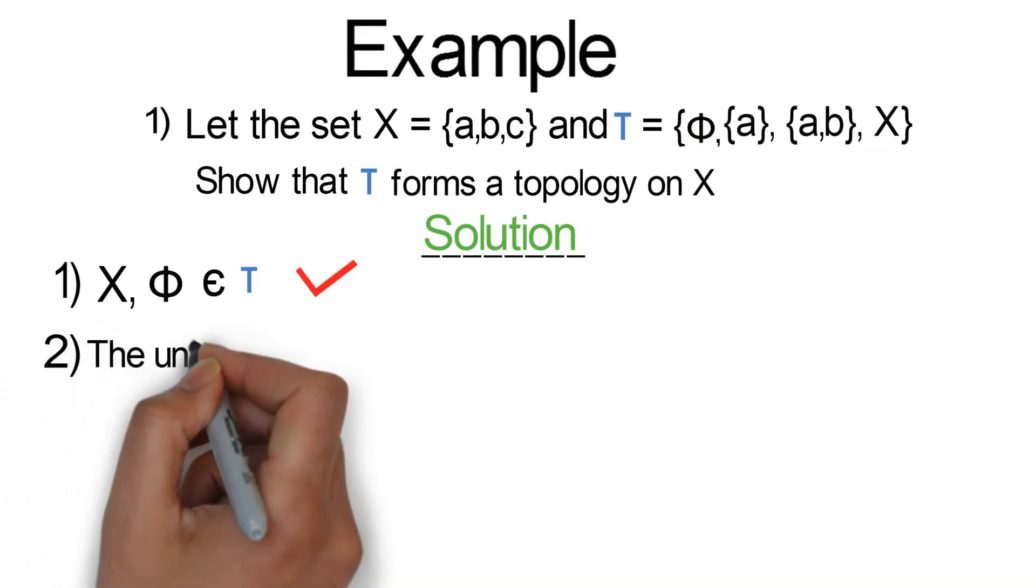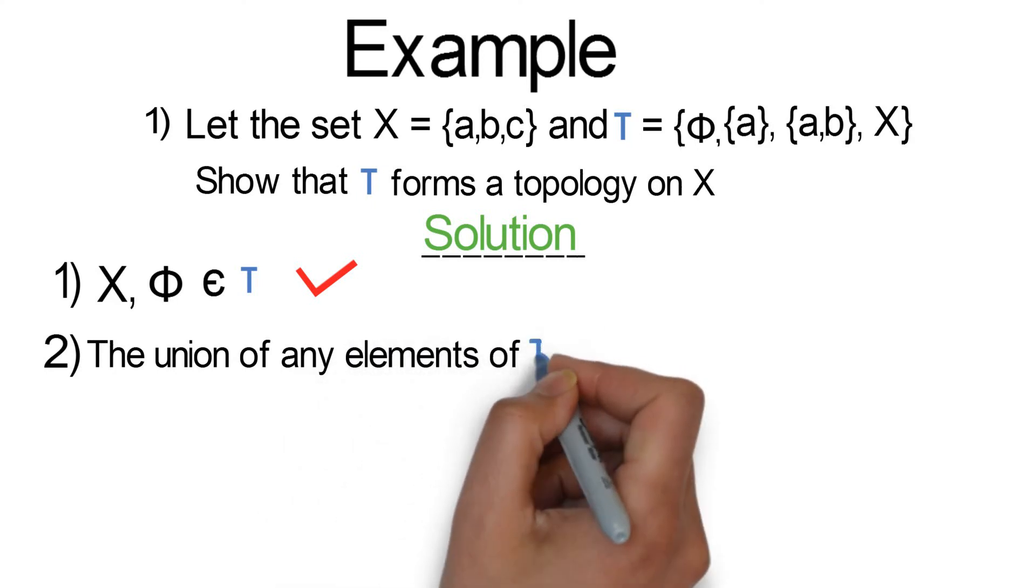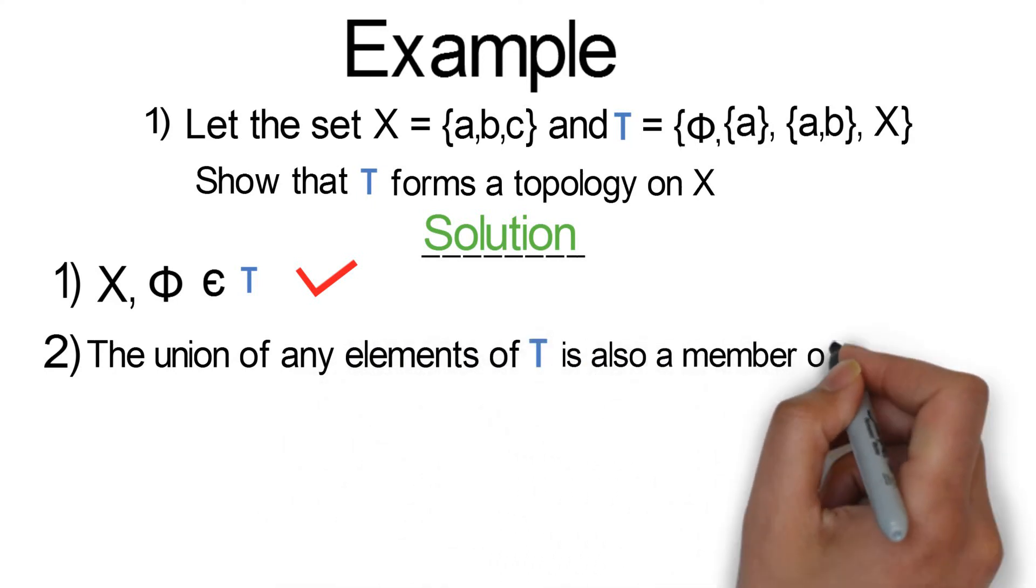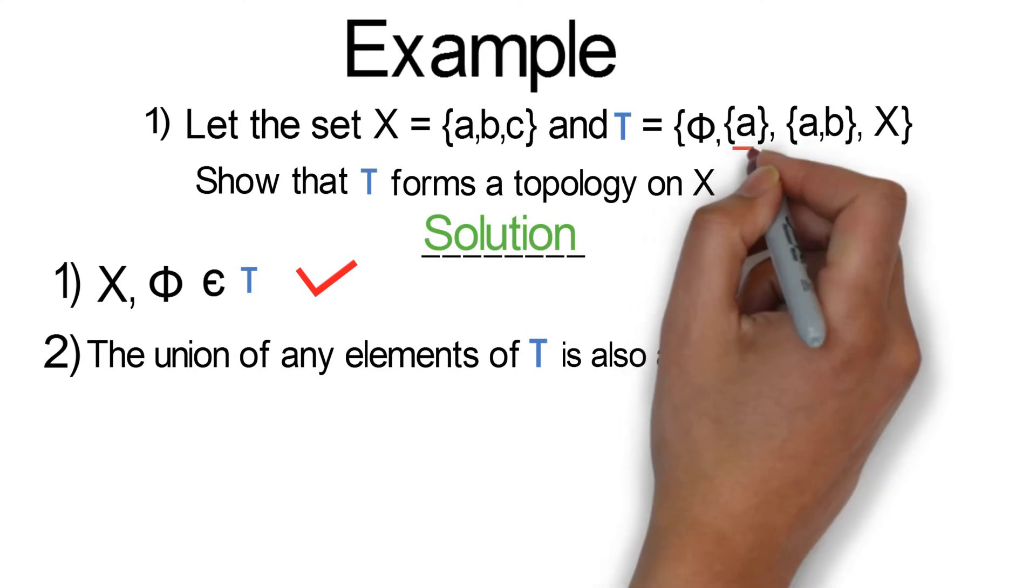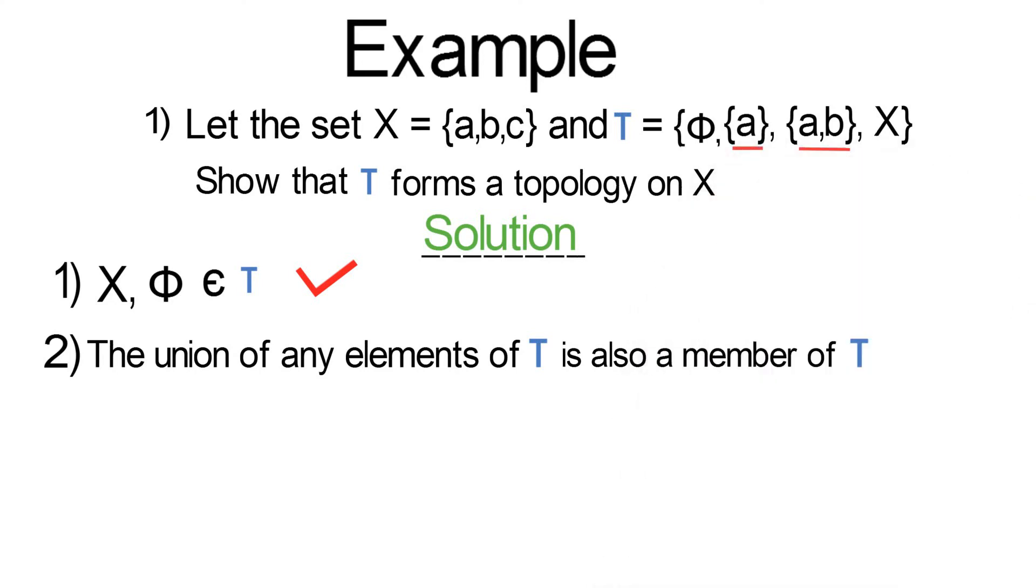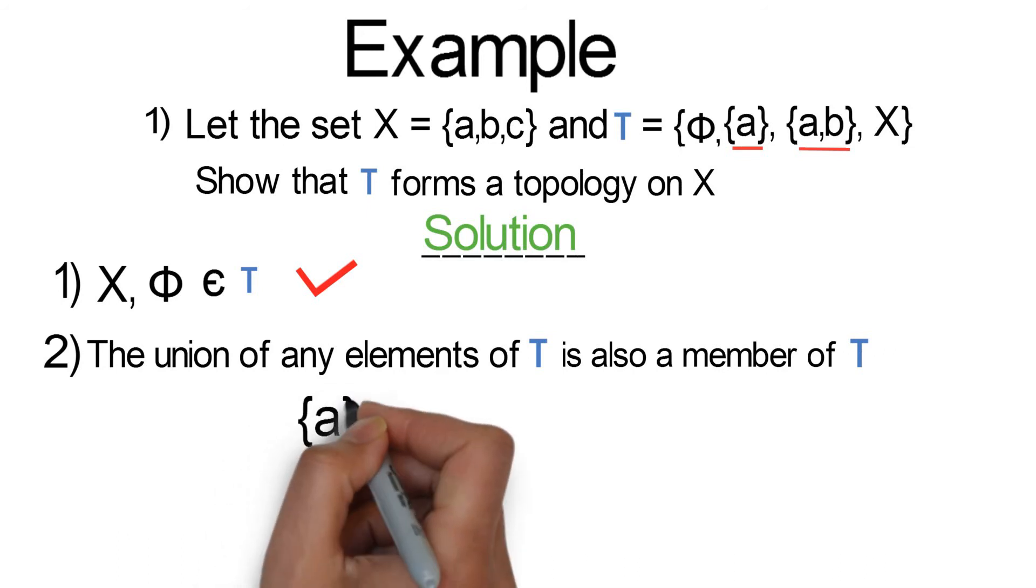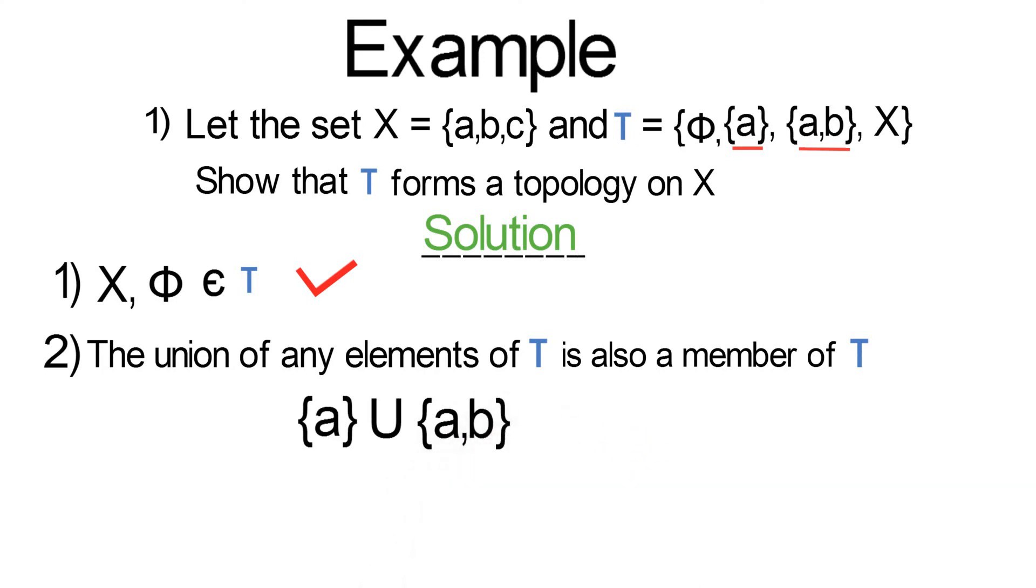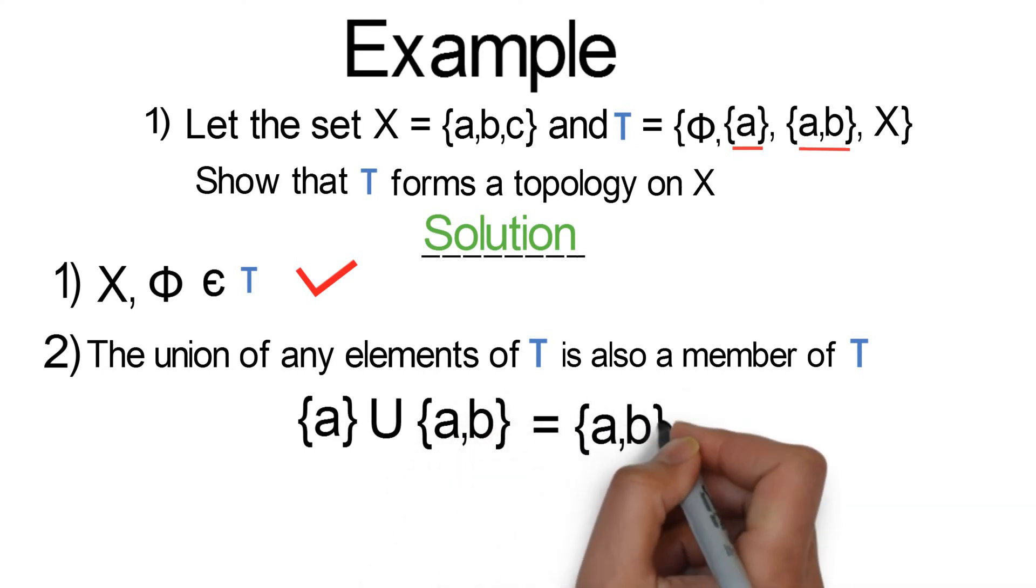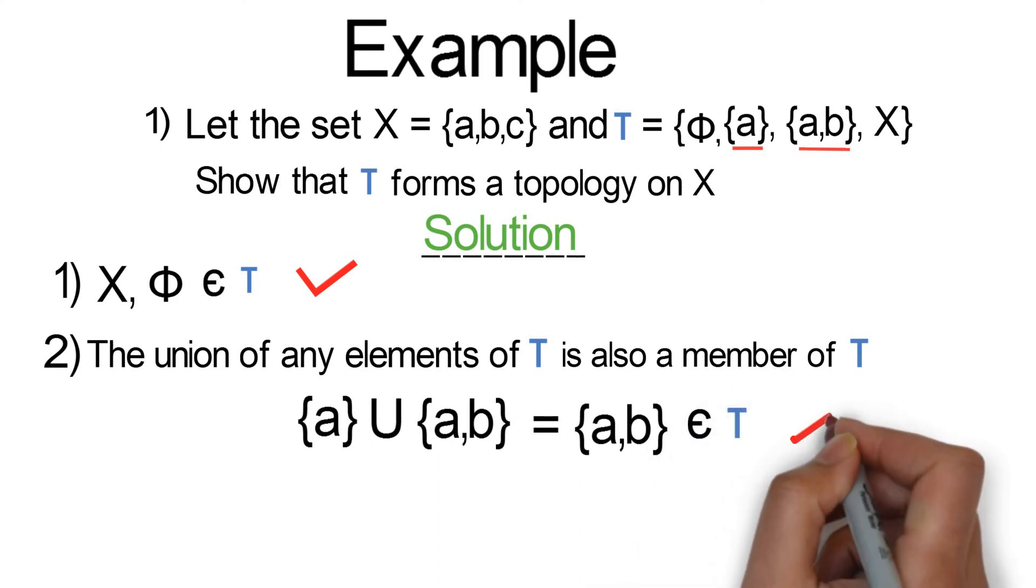Condition 2 states that the union of any element of tau is also a member of tau. Let's take any two elements from the set tau and find the union. So the union of the singleton set {a} and the set {a,b}, we have the set {a,b} when we find the union. And the set {a,b} is also a member of tau. So condition 2 holds.